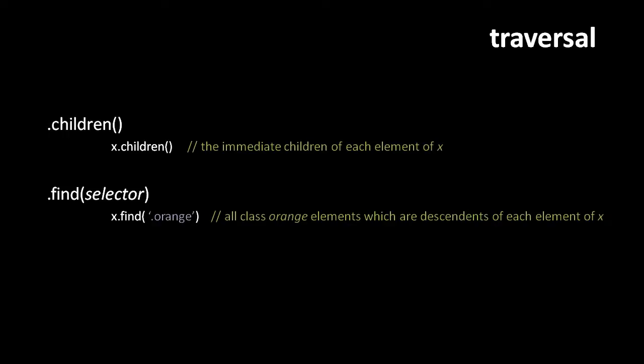The children method returns a new jQuery object containing all of the children of every element in the original jQuery object — so x.children() returns all children of every element in x. The find method returns a new jQuery object containing all descendant elements of the original jQuery object, filtered by a selector string. So x.find('.orange') returns all descendants of every element in x that are members of the class orange.